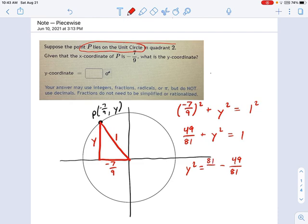That's 81 over 81, okay? 81 minus 49. Math. Math. I think that's 32 over 81.